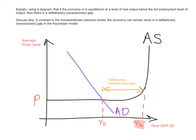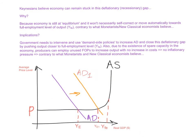If the aggregate demand curve is at a certain level and this happens to be the macroeconomic equilibrium, the actual output YE is much less than the full employment level of output YFE. Here, Keynesians say there is a deflationary or recessionary gap because there is a lot of spare capacity that could be filled up — actual output is very far from the full employment level. Keynesians believe that an economy can remain stuck in this deflationary or recessionary gap because the economy is still at equilibrium and won't necessarily self-correct or move automatically towards full employment, contrary to what monetarists or new classical economists believe.